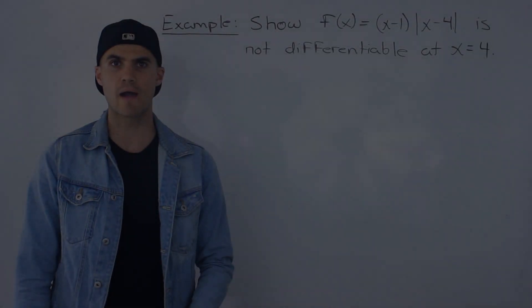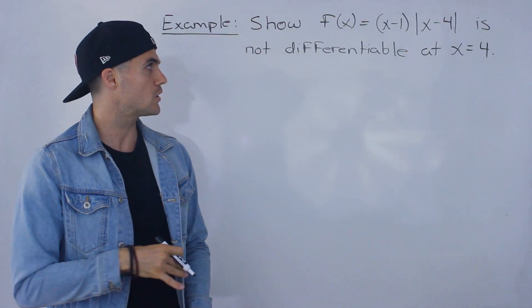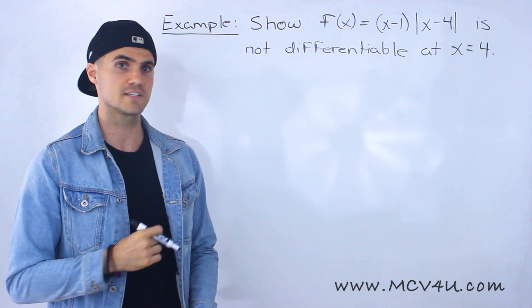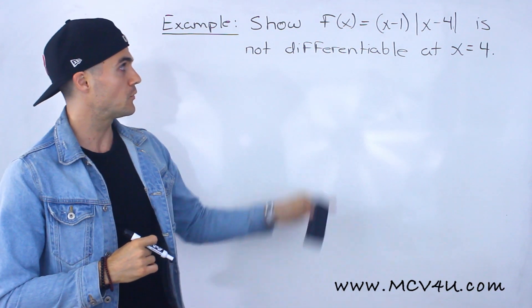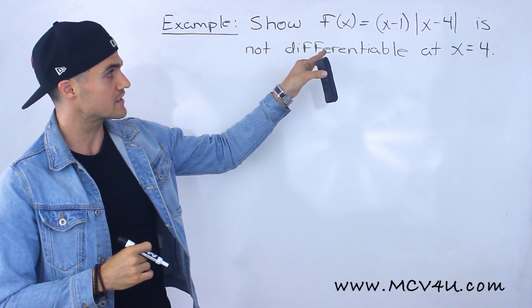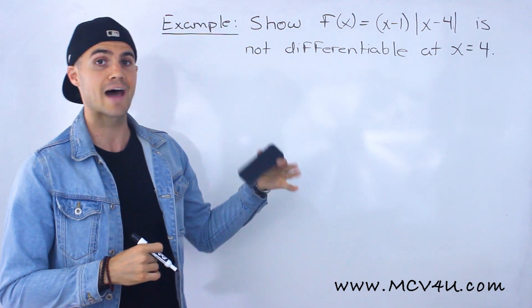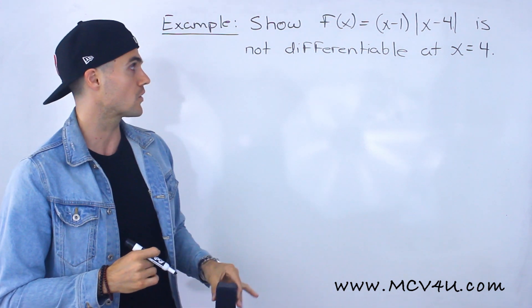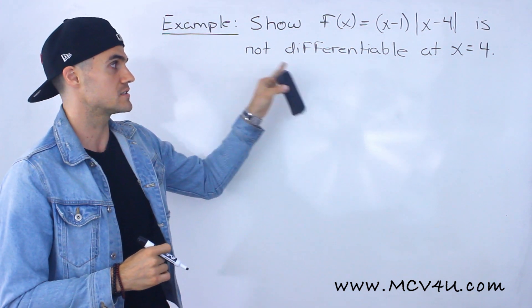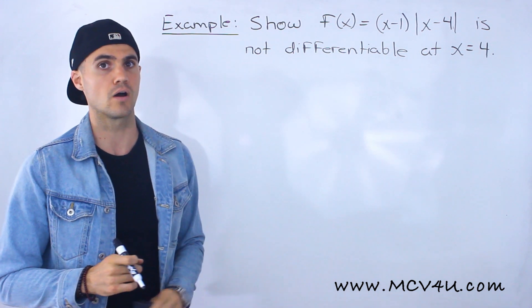Welcome back. Patrick here. In this video, we're going to do another example dealing with differentiability. We've got to show that the function f(x) = (x - 1) times the absolute value of x minus 4 is not differentiable at an x value of 4.